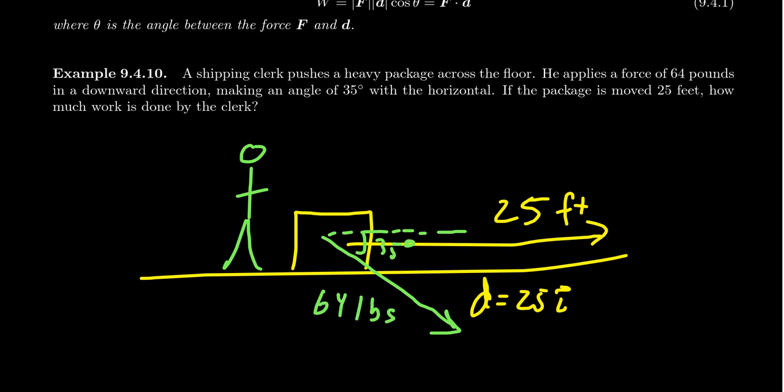Since he's pushing at an angle of 35 degrees with the horizontal, that's the angle between them. By the formula, the work equals the magnitude of the force, which is 64, times the distance, 25, times cosine of the angle between them, which is 35 degrees.